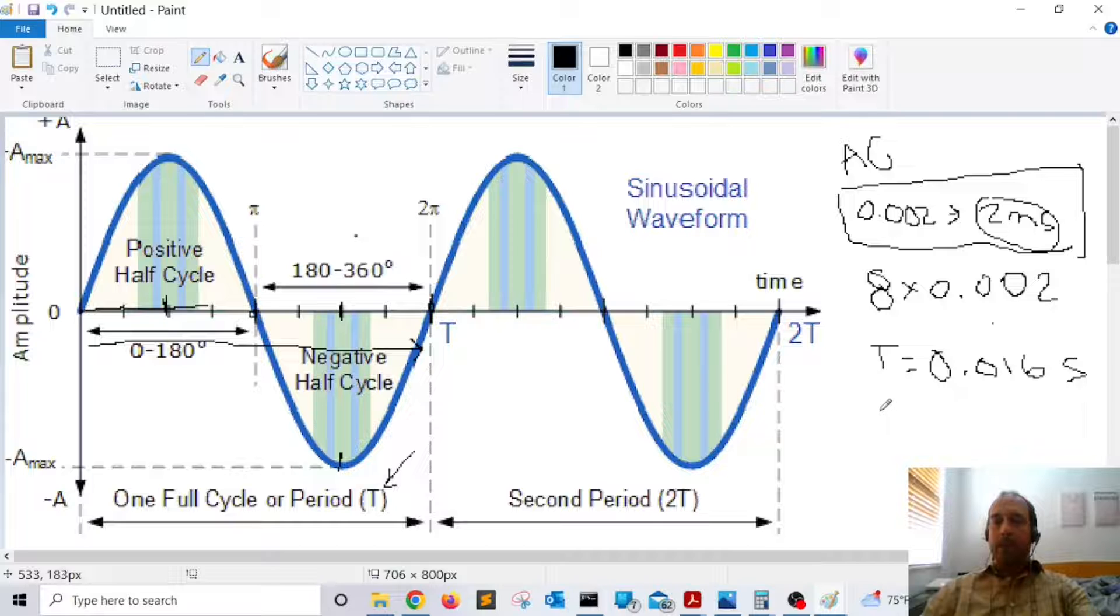So now we need to calculate frequency. So frequency is equals one over the period. So that will be one over 0.016.